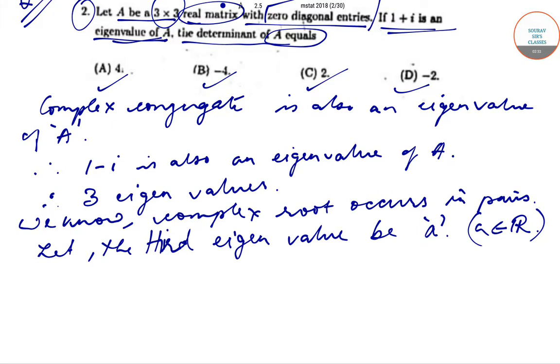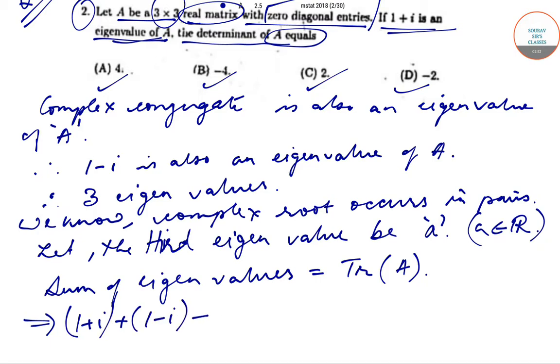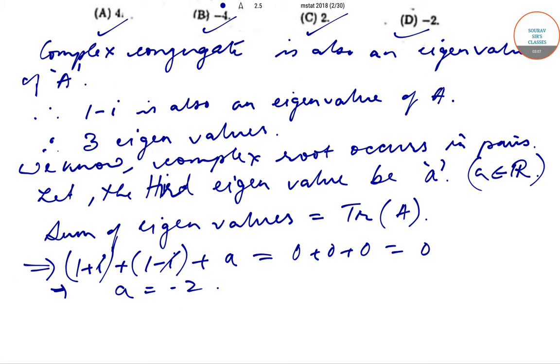We know that the sum of eigenvalues equals the trace of the matrix. The eigenvalues are 1+i, 1-i, and a. The trace, since all diagonal values are zero, equals 0. Therefore, (1+i) + (1-i) + a = 0, which gives us a = -2. So the third eigenvalue is -2.